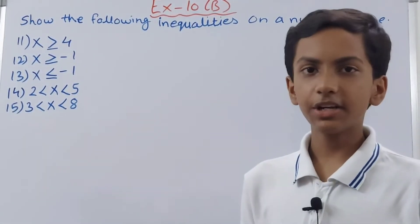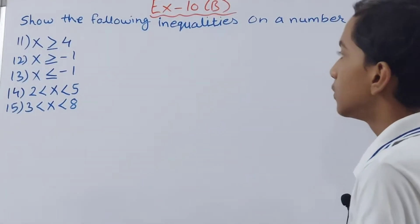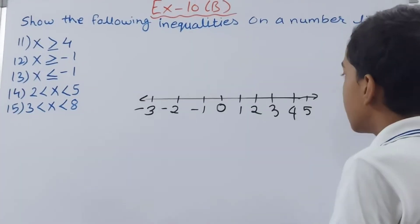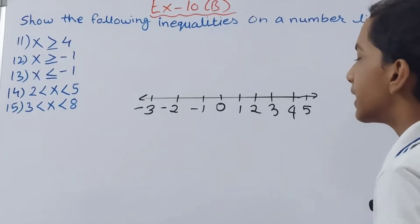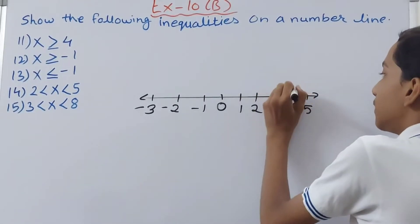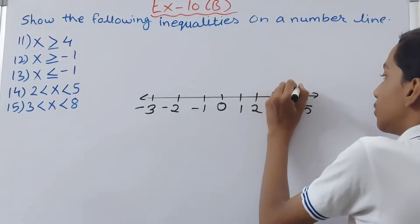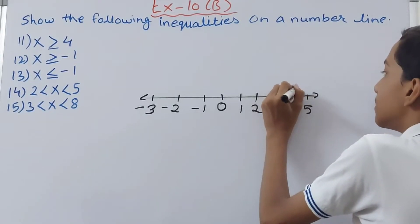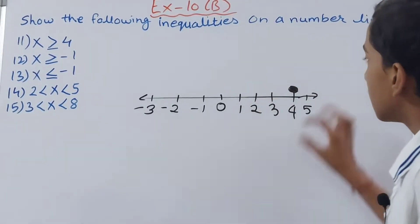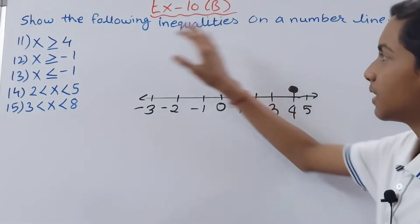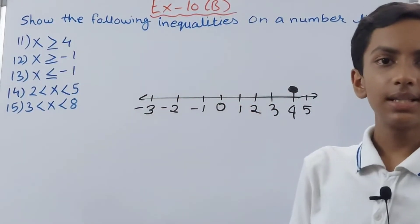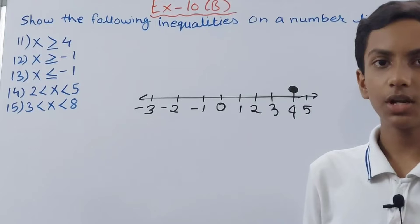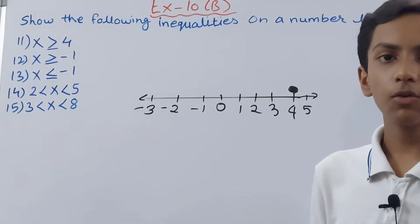In part 11 we have x is greater than or equal to 4. We draw the number line here. Since x has to be greater than or equal to 4, we draw a closed circle — that is, a shaded circle — because whenever greater than or equal to or less than or equal to is given in an inequality, the circle has to be shaded.